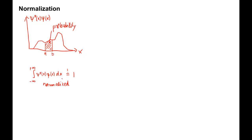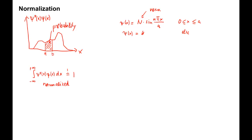Let's look at an example. Take the wave function psi of x, equal to N times sin of N pi x over a in the region between 0 and a, and the wave function is 0 everywhere else. The constant N is called the normalization constant, and it must be chosen such that the wave function is normalized.